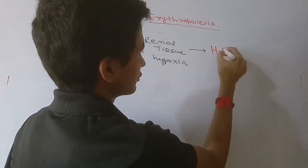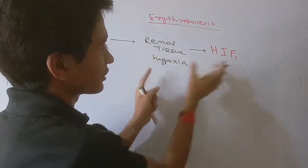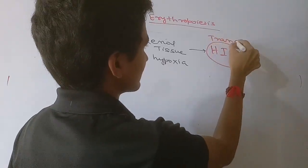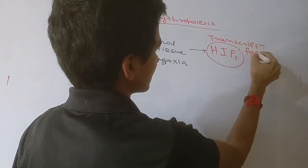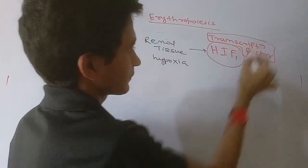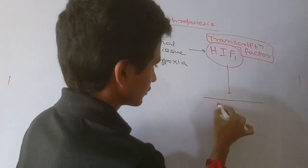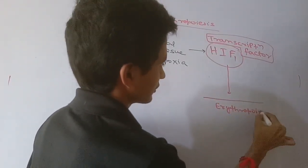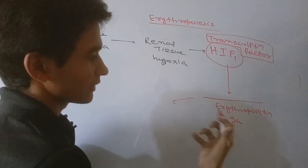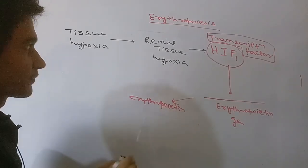HIF-1 is a transcription factor. It binds to the erythropoietin gene at the hypoxia response element and directs the formation of erythropoietin mRNA, ultimately leading to the formation of erythropoietin hormone in greater quantity. More erythropoietin increases the rate of erythropoiesis.